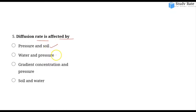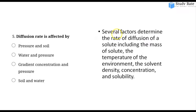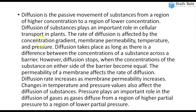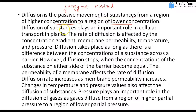The fifth question: What affects diffusion rate? Options include pressure and soil, water and pressure, gradient concentration and pressure, or soil and water. Several factors affect diffusion. Mainly, diffusion is affected by temperature, solvent density, and concentration gradient. Concentration gradient and pressure define the diffusion rate. Diffusion is a passive movement — without involvement of any energy.